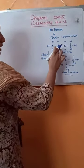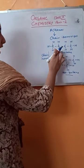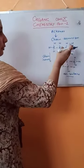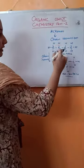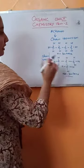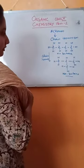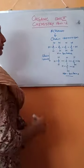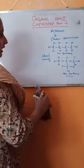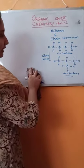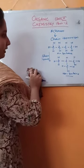This is butane only, but since the carbon atom is branched, it has a different name: isobutane. These two are known as chain isomers because a straight compound is being branched — the position of the carbon atoms is changed, and as a result the structure changes. This is known as chain isomerism.